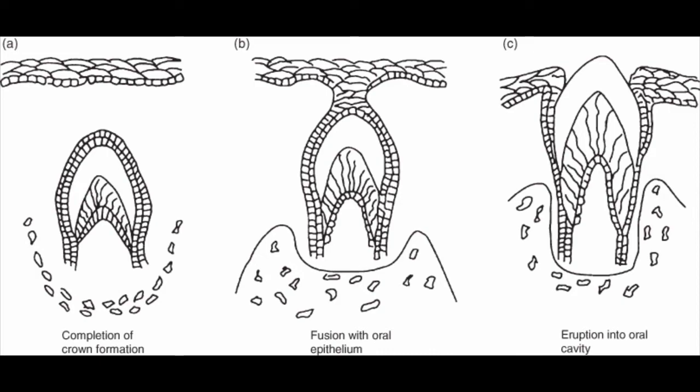The second theory was the root formation theory. This theory was quite logical because when root formation takes place, the root length and tooth length would increase, causing a push to the tooth to erupt into the oral cavity. However, this was also rejected because rootless teeth managed to erupt, and some teeth managed to erupt a distance greater than the root length. So this theory was also rejected.